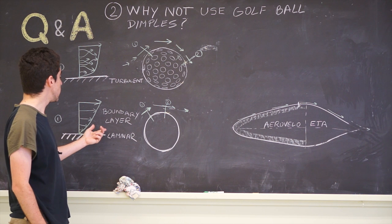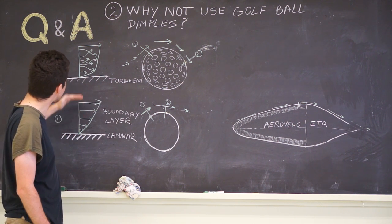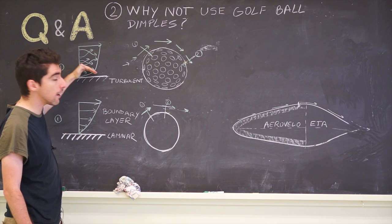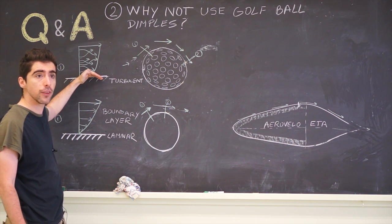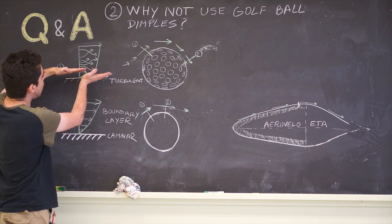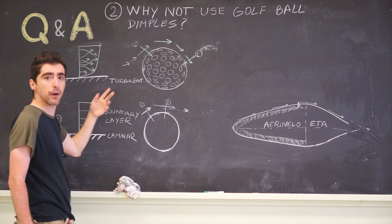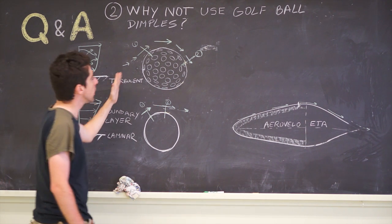Generally speaking, laminar boundary layer has less friction than turbulent, because in the turbulent case, we have fast air getting very close to the object, and because we know air is sticky, it causes higher friction forces.